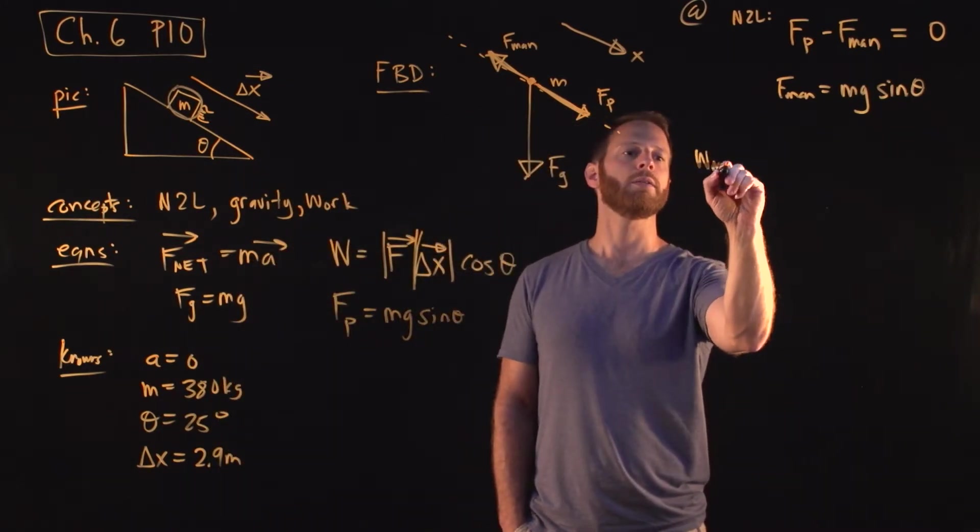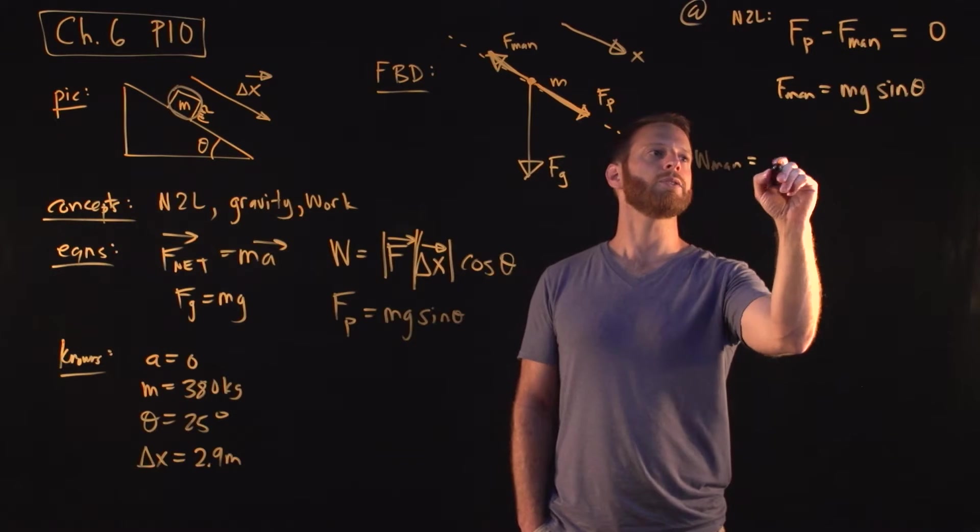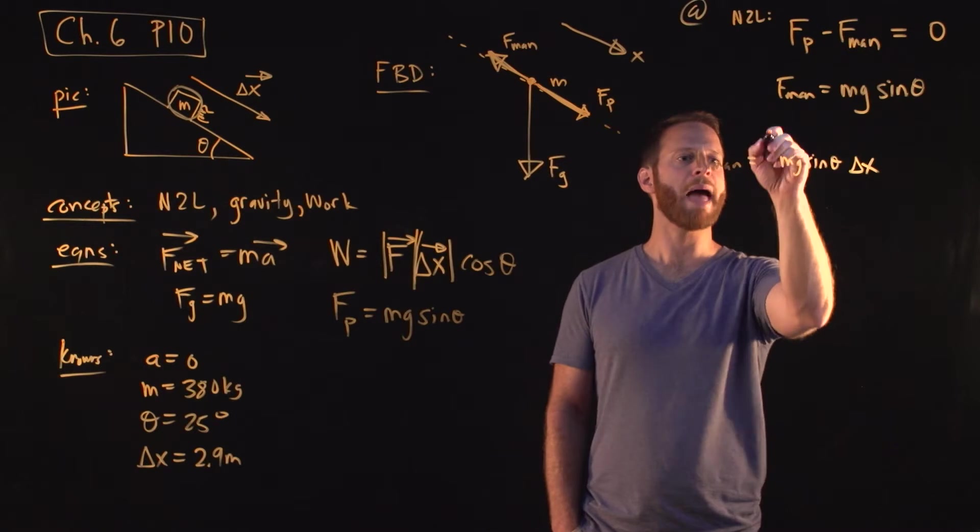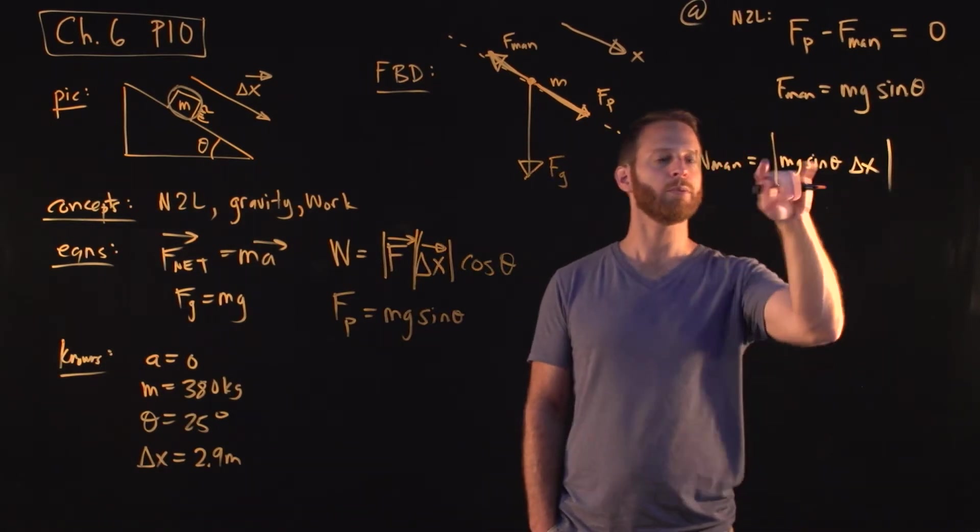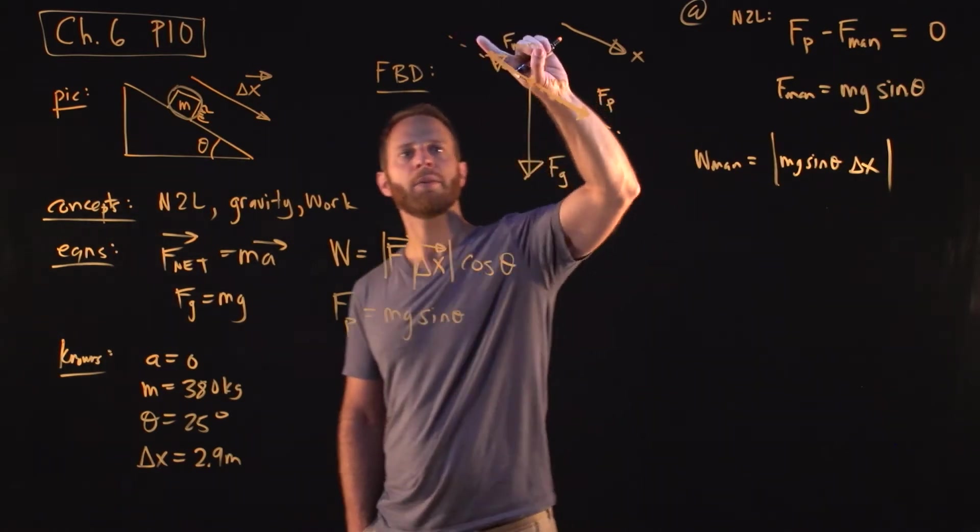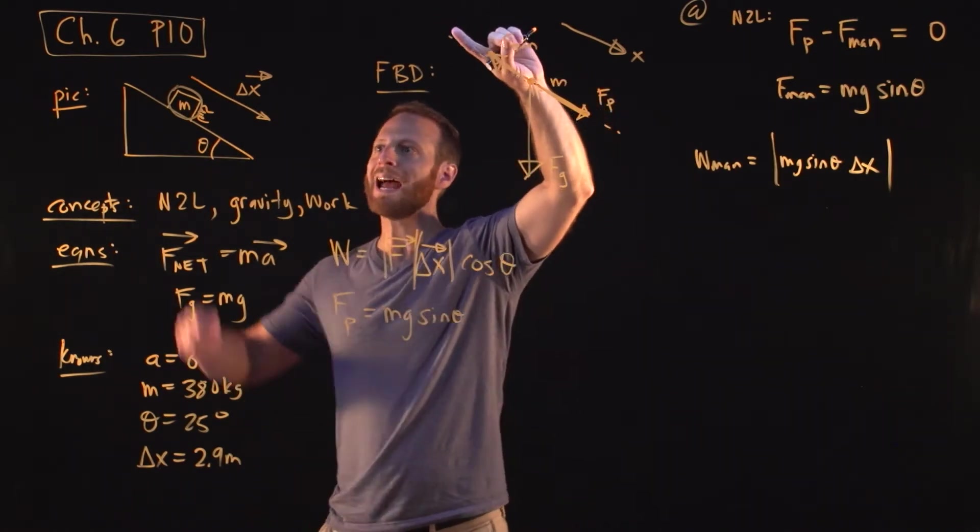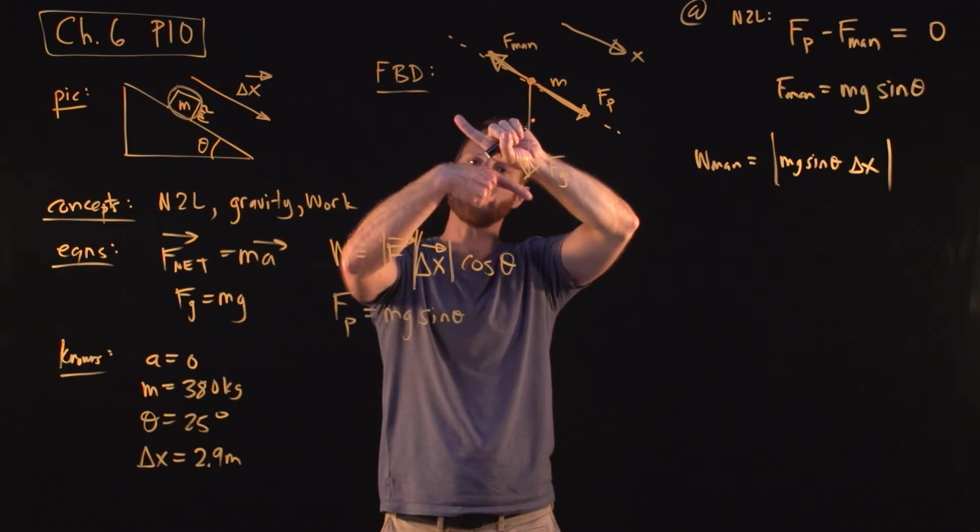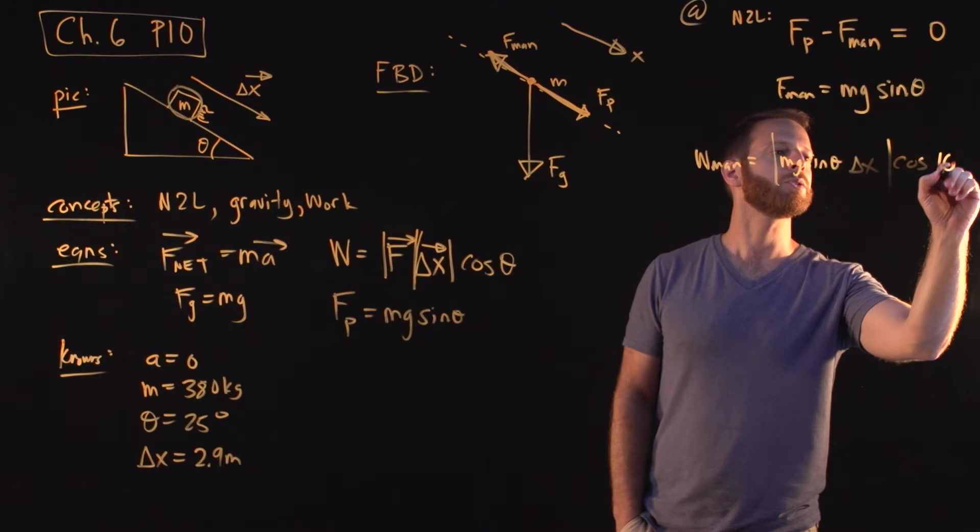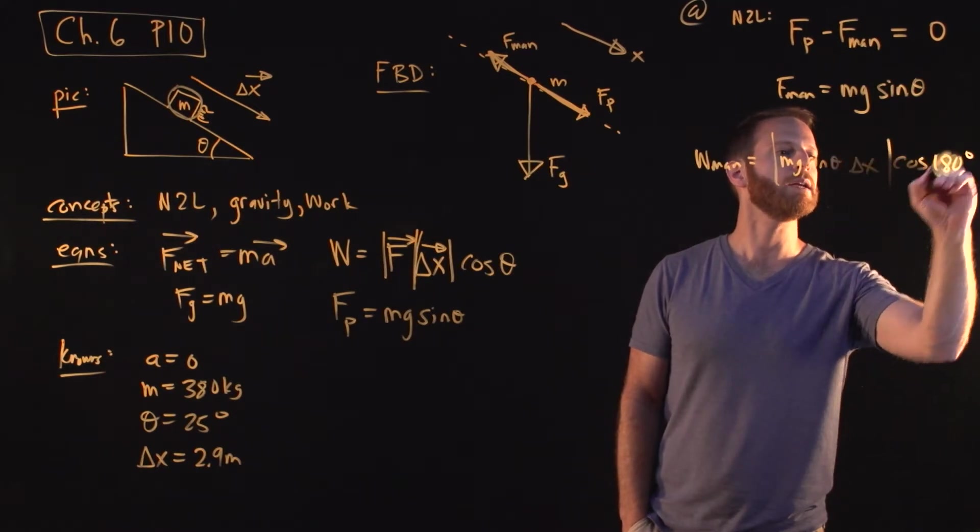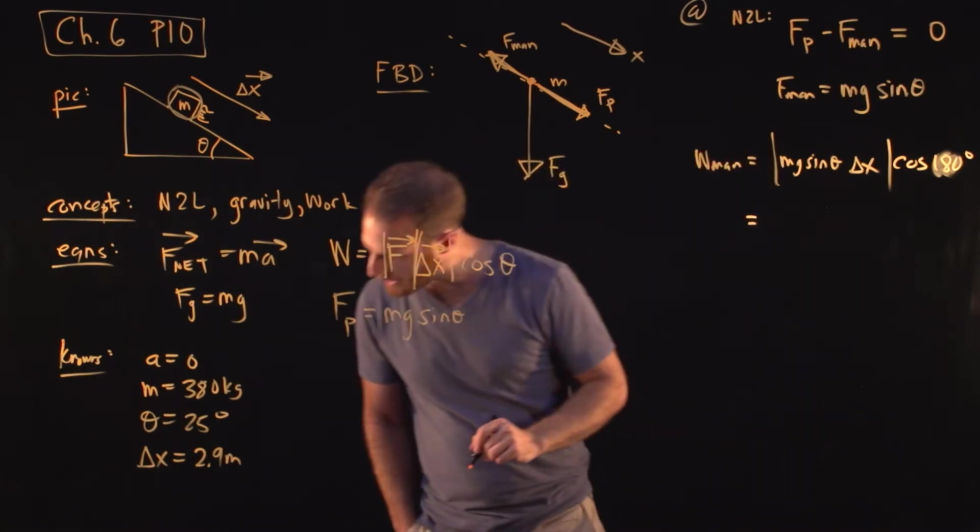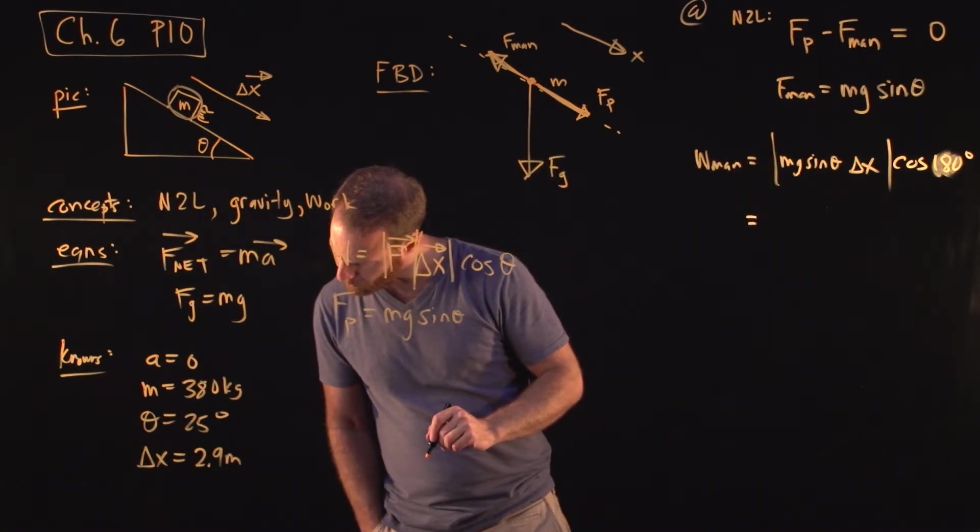Therefore, the work done by the man is this force, mg sin theta, the displacement - well this is the magnitude of, in case anything here was negative, we'll get the magnitude of that - times the cosine of the angle between the direction that the man is pointing, his force, and the displacement. So thinking about what that is, the angle between these two directions is not zero, but 180 degrees. Cosine of 180 degrees - and if you remember, cosine of 180 is negative one. So you plug everything in, and the precise value here is something that I apparently didn't write down.